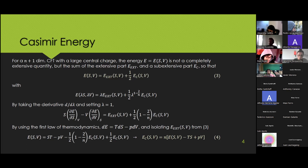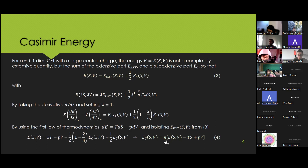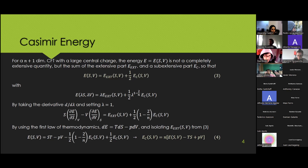One can differentiate with respect to the scaling factor lambda and set lambda equal to one to obtain a concrete relation between these quantities. Using the first law of thermodynamics to recognize the partial derivatives, we obtain an equation like an Euler identity relating the total energy, entropy, temperature, pressure, volume, and the Casimir energy. Equation four thus provides a prescription to obtain the Casimir energy for a system in which we know the energy and the other thermodynamic quantities.